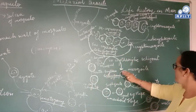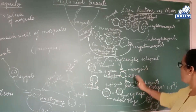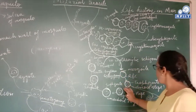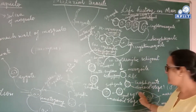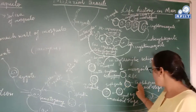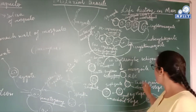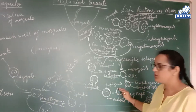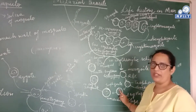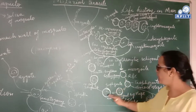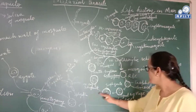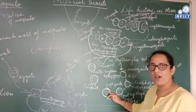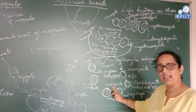In erythrocytic schizogony, the merozoite infects the RBC and takes a rounded shape, becoming a trophozoite. The trophozoite then becomes a discoid stage, where it is shaped like a disc. After the discoid stage, a signet ring stage occurs when the trophozoite along with its nucleus is pushed toward the cytoplasmic membrane by a vacuole, though the vacuole's lifespan is very short. This signet ring stage is followed by an amoeboid stage in which the trophozoite takes the shape of an amoeba with many pseudopodia.